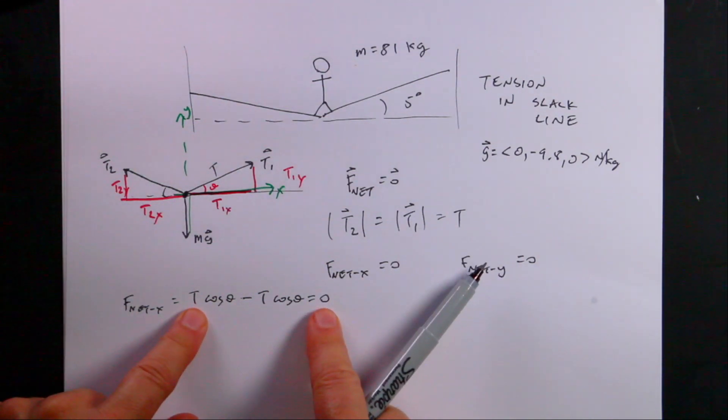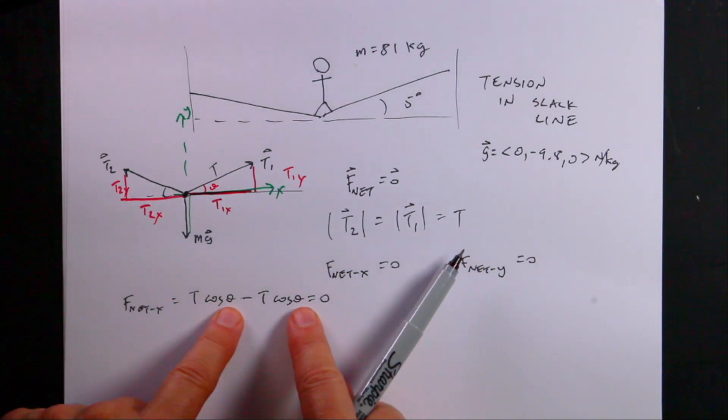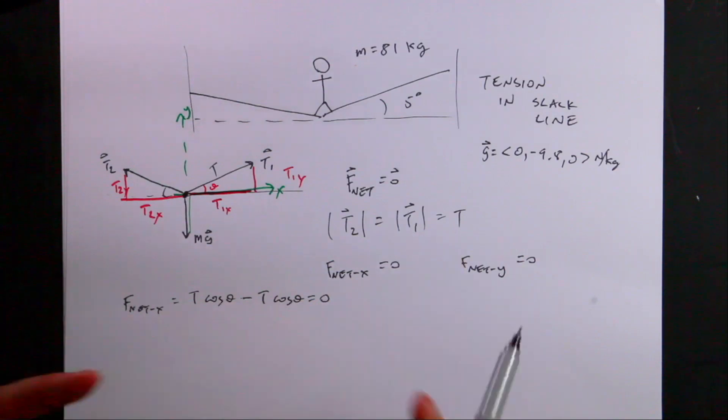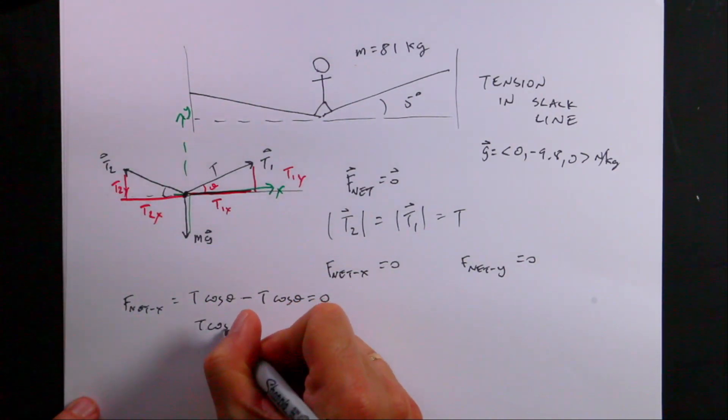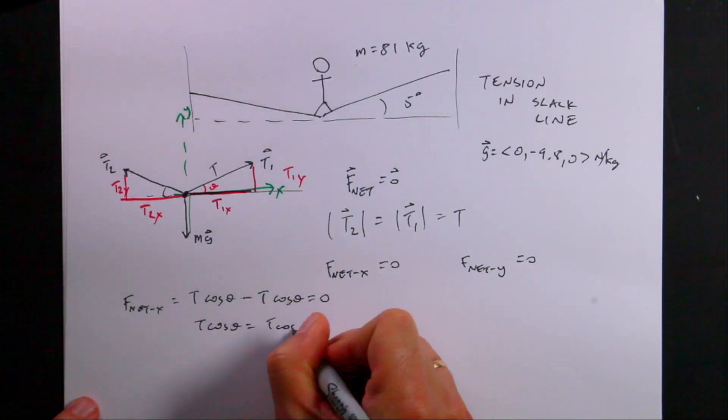the only way for these two forces, that's the only two forces in the x direction, the only way for these two forces to add up to zero is if the angles are the same. The angles have to be the same. But then I get T cosine theta equals T cosine theta.